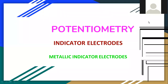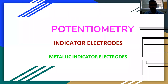We have understood about the basics of potentiometry: how to represent the potentiometric electrochemical cell, how to schematically depict it, and how to systematically write the electrochemical cell assembly containing indicator electrodes and reference electrodes along with the salt bridge, which can be used during the analysis of any sample.